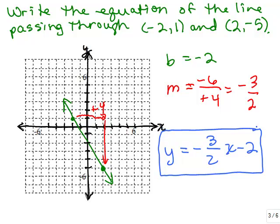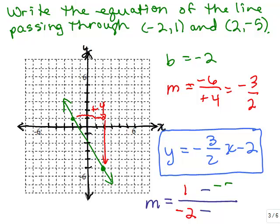The other way to figure out the slope between those two points, as opposed to just counting the spaces, would be to use the slope formula. Let's do it that way as well and make sure we really do get negative 3 halves. We take one ordered pair and put the y over the x — we'll put the 1 over the negative 2 — and then we'll take the other ordered pair and put the y over the x, which will be negative 5 over 2. That gives me 6 over negative 4, which does reduce to negative 3 halves. So we can also verify algebraically that the slope is negative 3 halves.